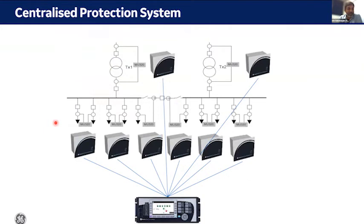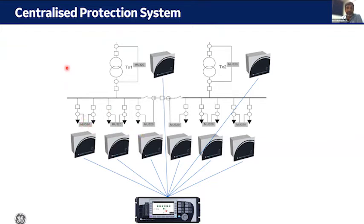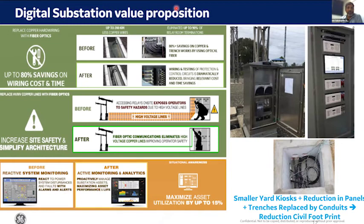In a digital substation, merging units provide sample values for each bay available on the network. In sub-transmission networks, instead of a separate backup relay per feeder, a centralized protection concept can provide backup protection to all feeders. This kind of optimization through the process bus is one of the benefits available to users when adopting digital substations.